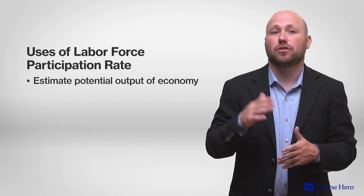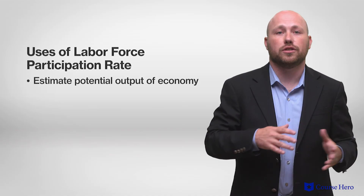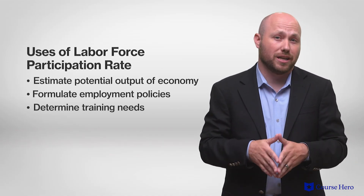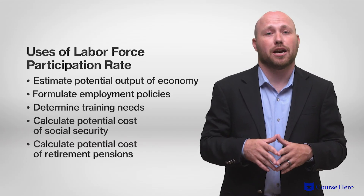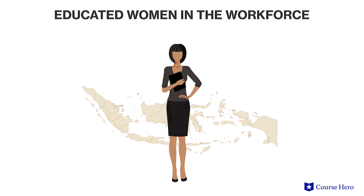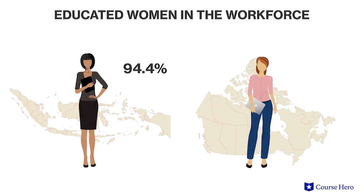Policymakers use labor force participation rates to estimate the potential output of an economy, formulate employment policies, determine training needs, and calculate the potential cost of social security and retirement pensions. Participation rates of specific categories of workers can help identify problems those groups face. In many countries, the labor force participation of women is extremely low and may vary with age, social status, fertility rates, and educational levels. In Indonesia, the participation rate of educated women in 2000 was 94.4%, while in Canada the rate was 58.9%, perhaps because higher education for women is more compulsory in Canada than in Indonesia. Labor force participation rates for people ages 15 to 24 tend to be affected by the availability of educational opportunities.